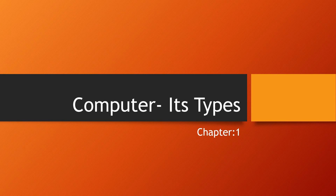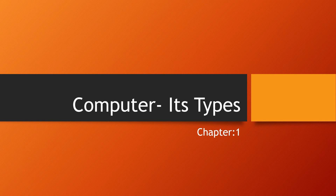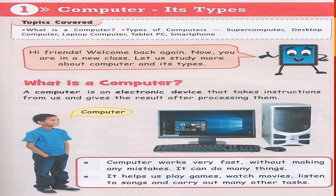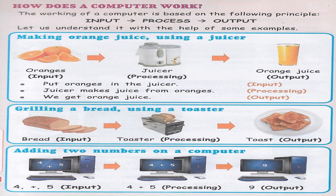So in the previous classes, what we were seeing — we were seeing about computer and its types. That is your first chapter in your new computer textbook. So here, we saw about what is a computer. A computer is an electronic device, right?